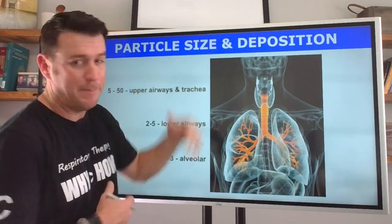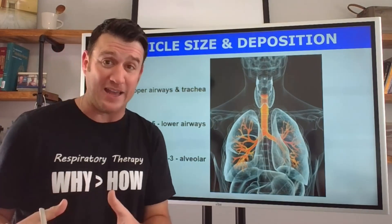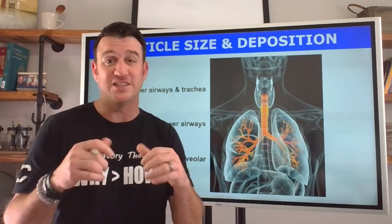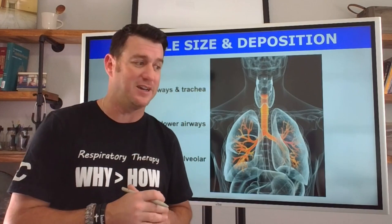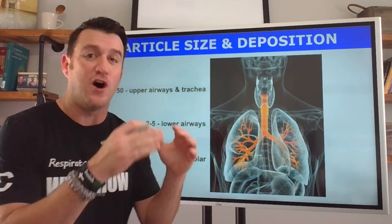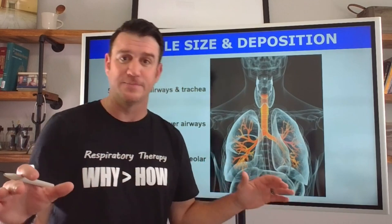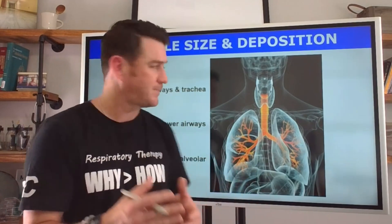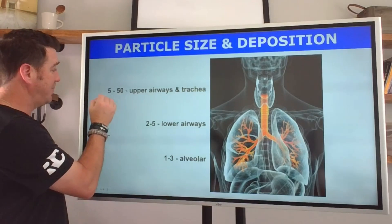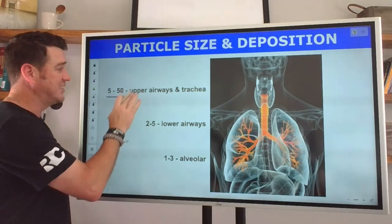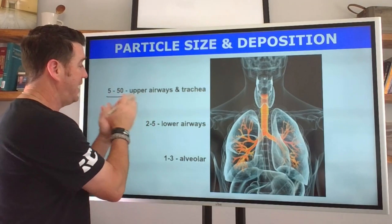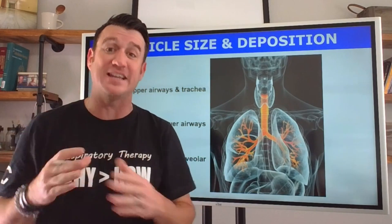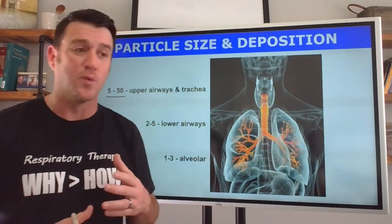What comes up is particle size and deposition. Particle size is related to deposition, and when we say deposition we're talking about where do these suspended particles of aerosolized medications, where do they fall out of suspension and land. We see that 5 to 50 is going to lend its way and most likely deposit into the upper airways and the trachea. This is the nose, the oropharynx, the pharynx, the larynx, and even the trachea.